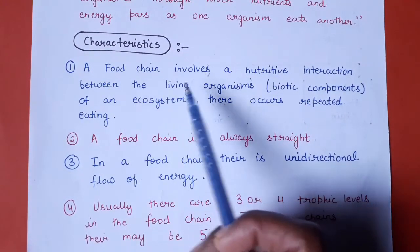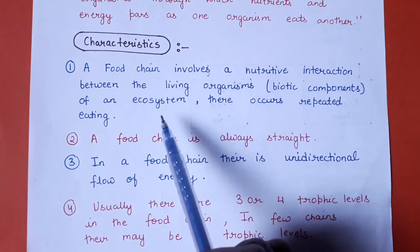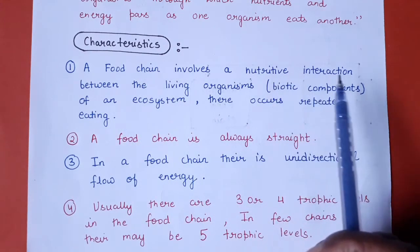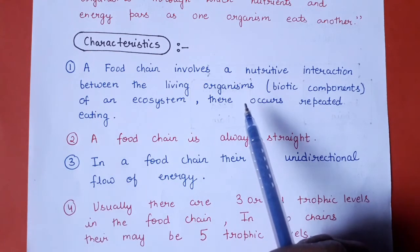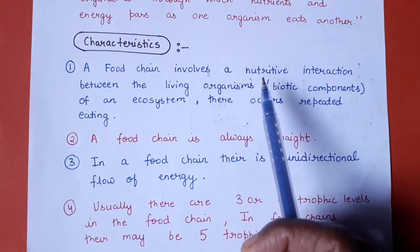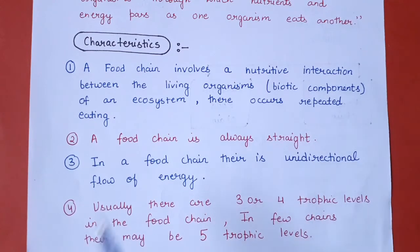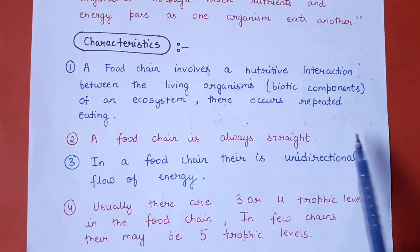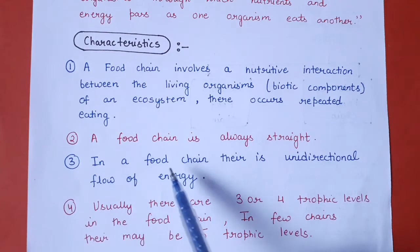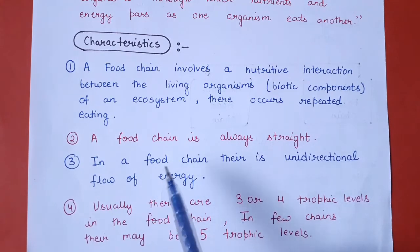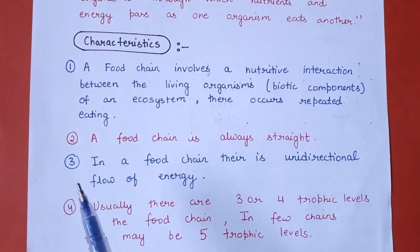Characteristics ki agar hum baat karein toh: first, a food chain involves a nutritive interaction between the living organisms of an ecosystem. Yahaan ek organism doosre organism ko kha raha hai, so usse woh energy aur nutrition le raha hai — isliye yahaan ek tarike ka nutritive interaction hota hai biotic components ke beech mein. Second characteristic: a food chain is always straight. Third point: in a food chain there is unidirectional flow of energy — plant se energy ka flow last tak, top consumer tak chalta rehta hai.